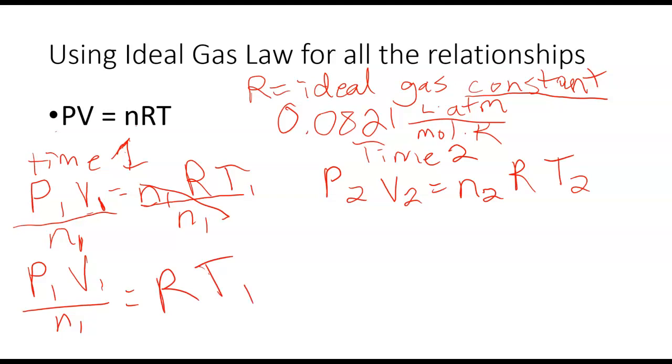So P1V1 over n1 equals RT1. I want to get rid of P1, I want to get rid of my pressure. So to get rid of my pressure, I'm going to have to multiply by 1 over P1. My pressure is going to cancel out on this side, so I'll get V1 over n1 equals R times T1 over P1.